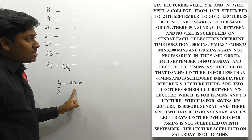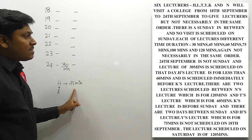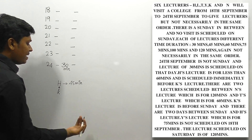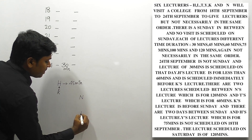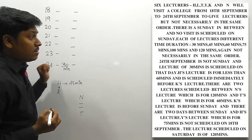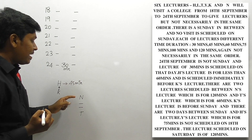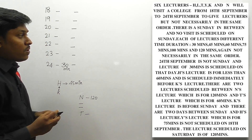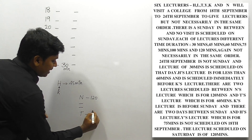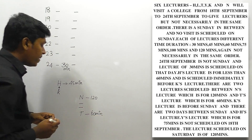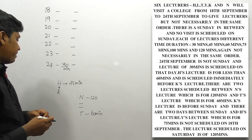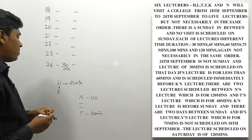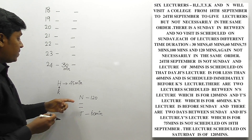There are two lectures scheduled between N's lecture (which is 120 minutes) and T's lecture (which is 60 minutes). So T is directly assigned 60 minutes and N is 120 minutes, but there must be a gap of two lectures between them. We need more information to fix their exact positions.